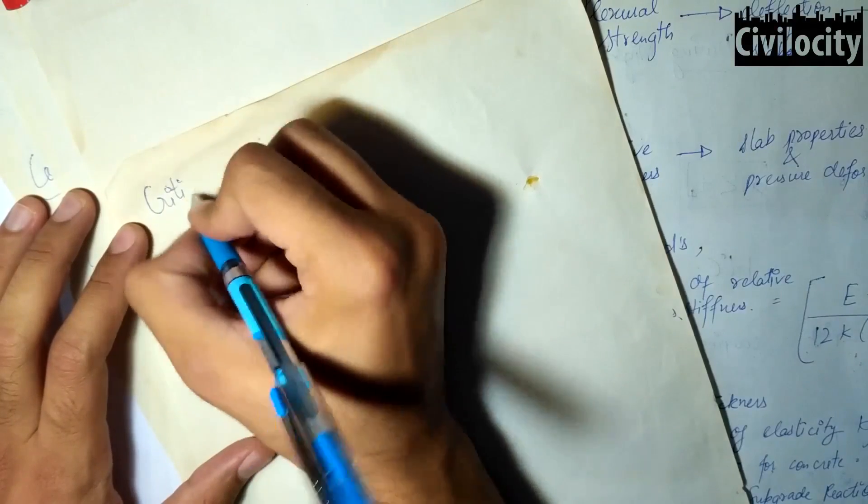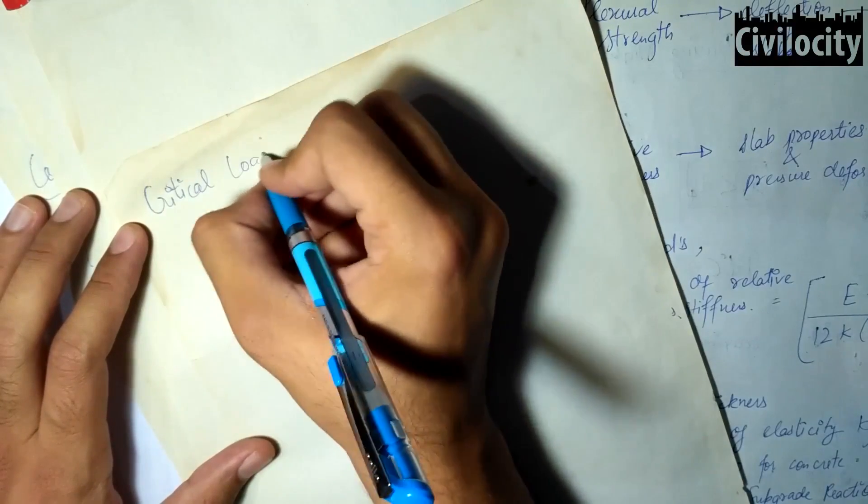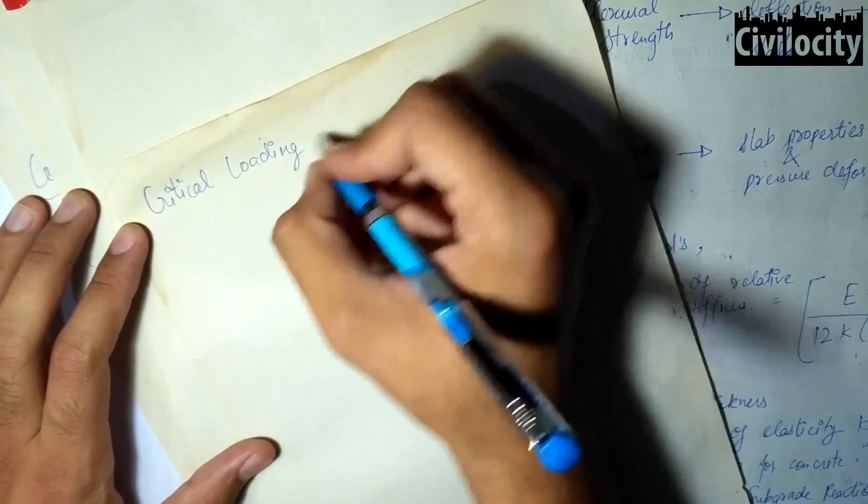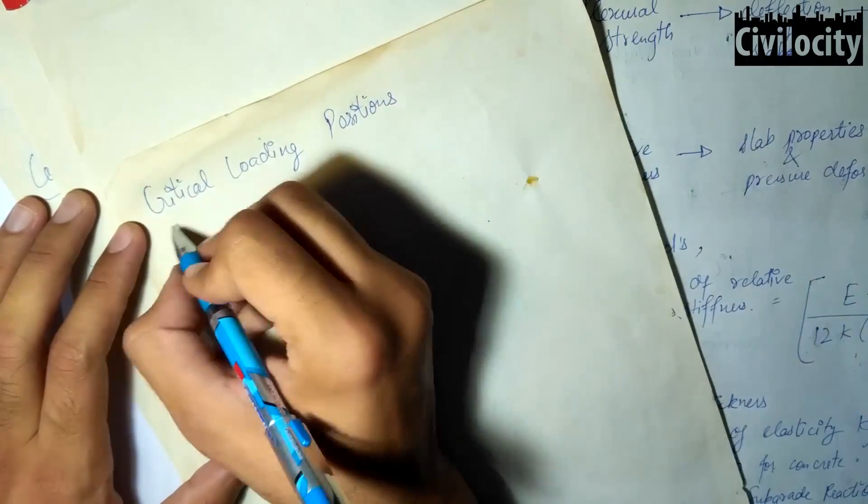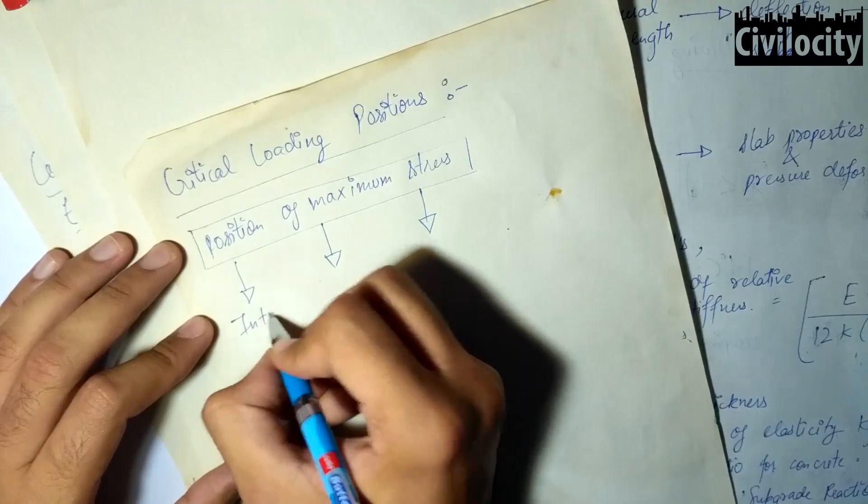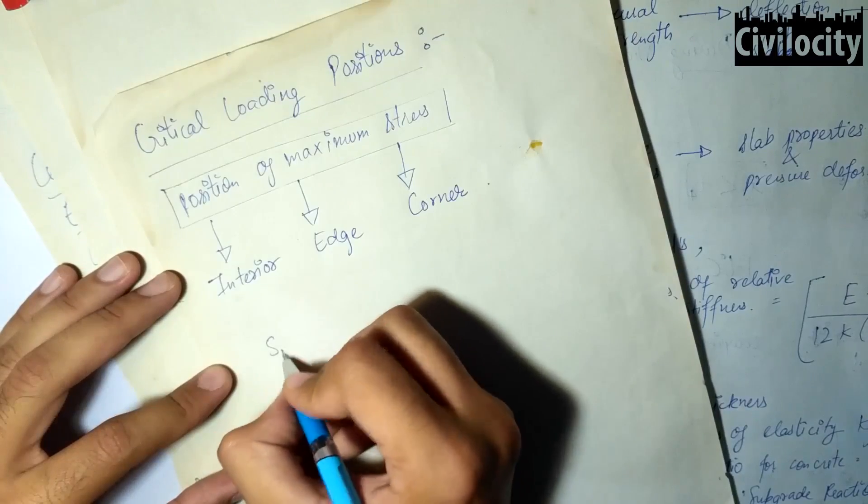Now, let's talk about the critical positions of loading. These positions are those where the maximum stress is induced. There are mainly three typical positions: at the interior, at the edge, and at the corner of the slab.